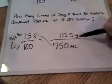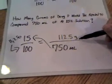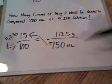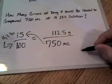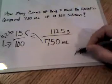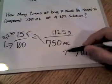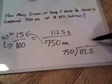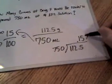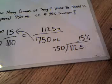That's actually the answer to our question. That's how many grams of drug P we would need to compound 750 milliliters of a 15% solution. To double check our answer, we'll take 112.5 and divide it by 750, which gives us 0.15, which is the same as 15%. So we know our answer is correct.